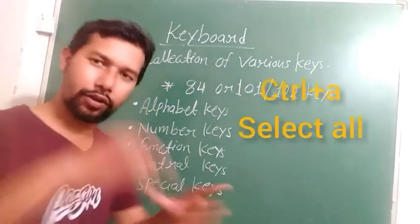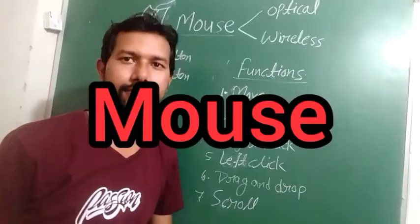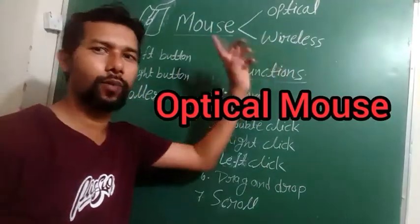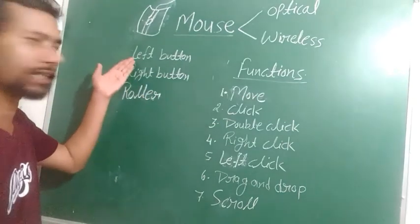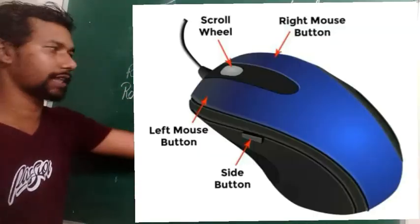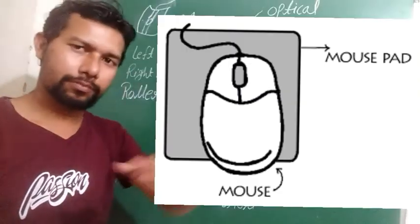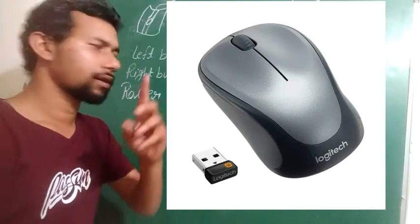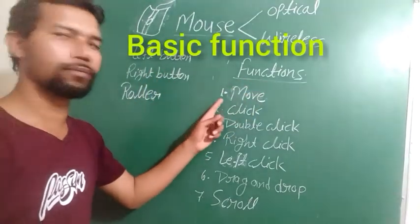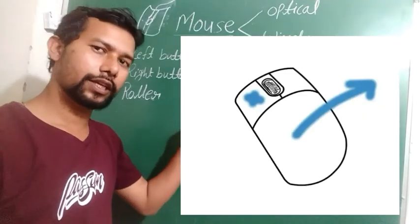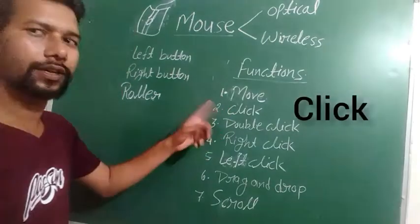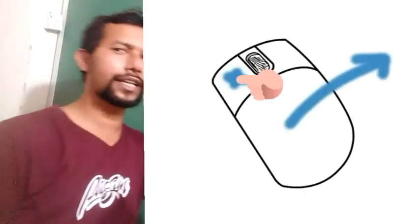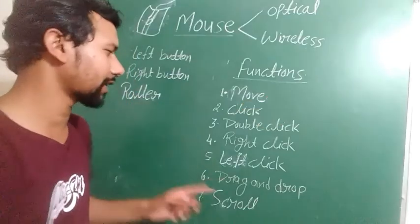The second important input device is the mouse. Mouse has two types: optical and wireless. Basically, a mouse has three important buttons: left button, right button, and a roller. An optical mouse moves on a flat surface, while a wireless mouse works remotely like a TV remote. Mouse performs several important functions: Move — you can move any icon using the mouse. Click — clicking the left or right button once is called a click. Double click — clicking twice continuously is called a double click.